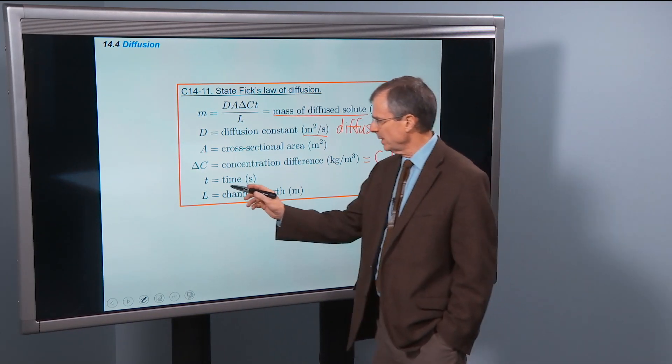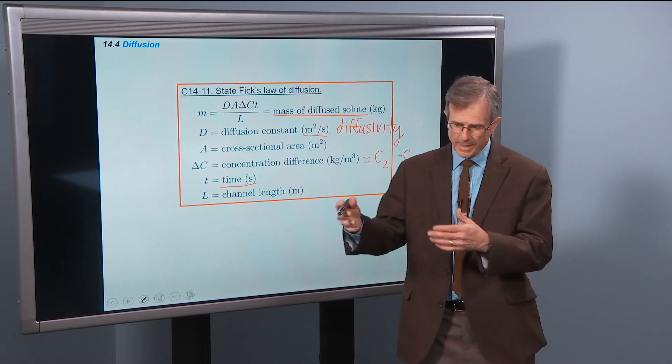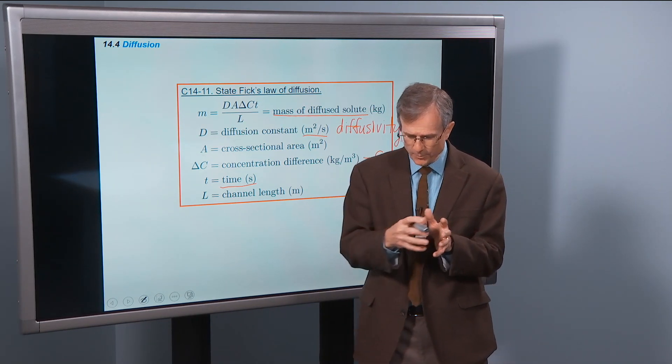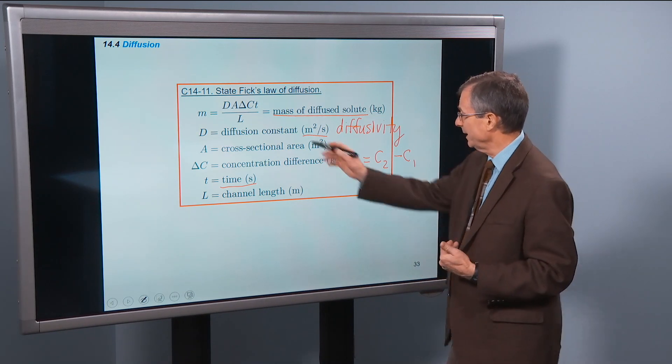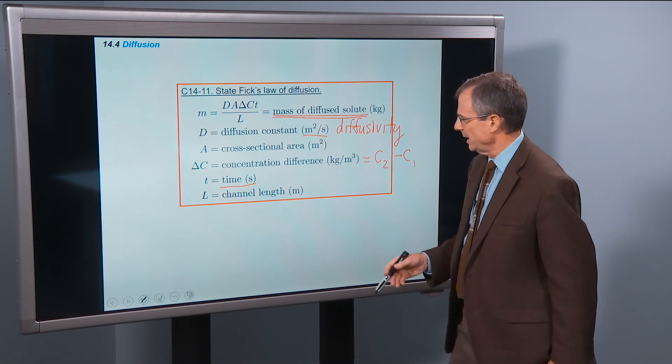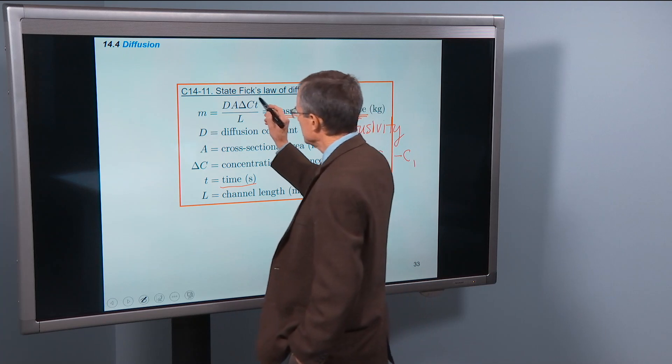Now, T is the time. Obviously, the longer you let that thing sit there and randomly diffuse, the more that you'll get to diffuse. And then L is the channel length. And this is the formula. You can check the units out.